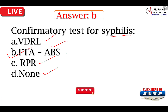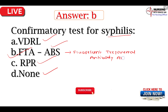तो यहाँ पर आप सभी को याद रखना है। इसका full form: F हो गया fluorescent, fluorescent treponemal antibody absorption test होगा। अगर जरूर इसको याद रखें। तो answer होगा B option।